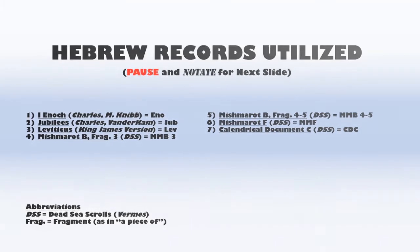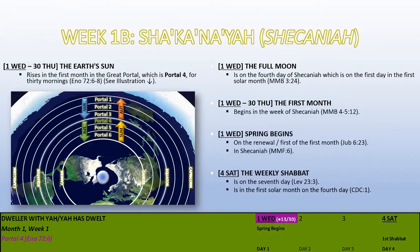Let's go to the heart — the meat and potatoes — which is the actual calendar week. As you see at the top, Week 1B, Shekaniah. At the very bottom, it says 'the dweller with Yahweh has dwelt,' which is the meaning of Shekaniah. It's interesting — tracing the full year and meditating on that particular idea each week. You will see a parallel with your individual life, things to be thankful for, and circumstances that seem to line up.